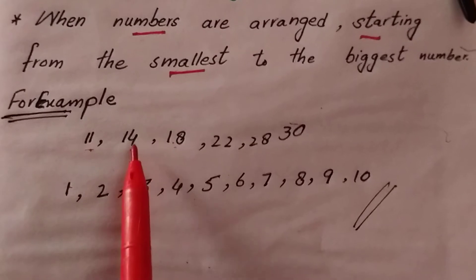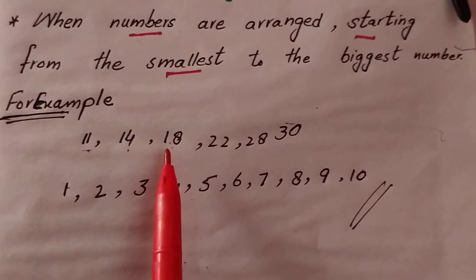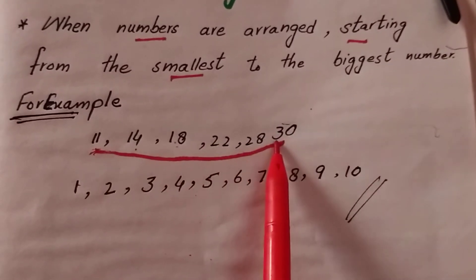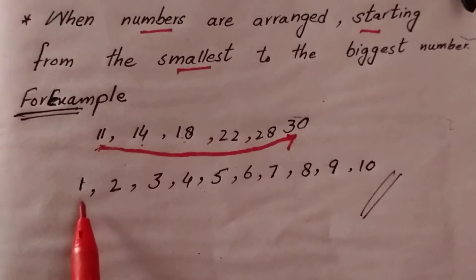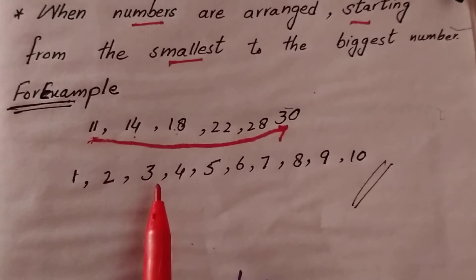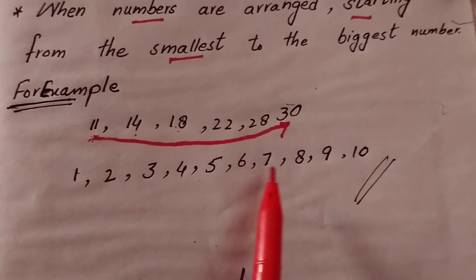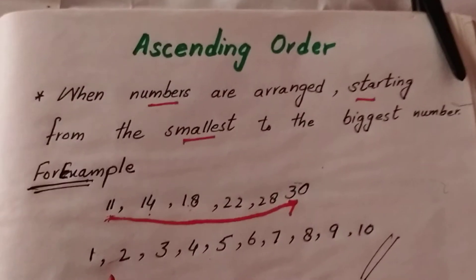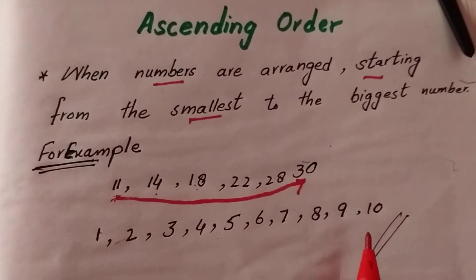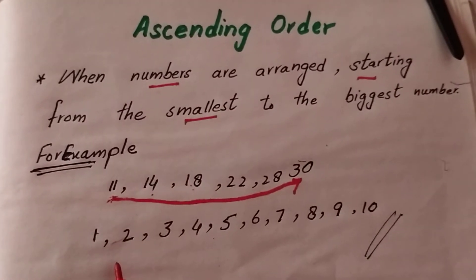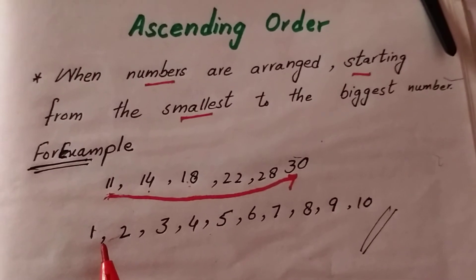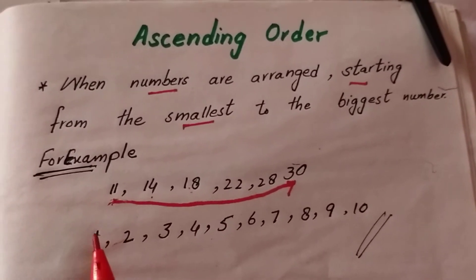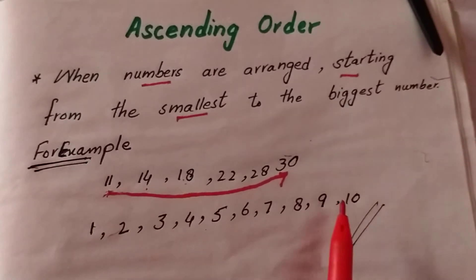18 is greater than 14, and 22 is greater than 18 — smallest to the biggest. Another example: 1, 2, 3, 4, 5, 6, 7, 8, 9, 10 — starting from the smallest to the biggest. In ascending order we arrange the numbers from the smallest to the biggest.